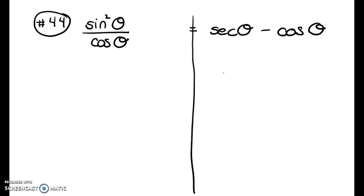Here's another example. Both sides look complicated, so I'll just pick the left side to work. I notice the right side has a subtraction, so somehow I'll need to produce two things being subtracted. Using the Pythagorean identity sin²θ + cos²θ = 1, I solve for sin²θ to get 1 − cos²θ.